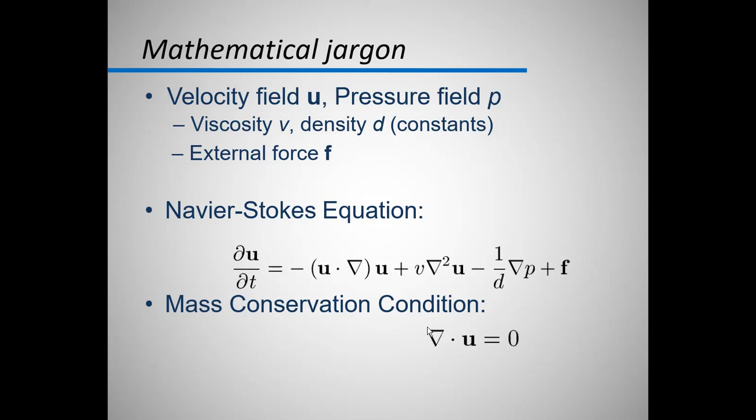So when the viscosity is multiplied by the second derivative of the velocity, it becomes the shear stress terms. For an inviscid flow this term will become zero because the viscosity will become zero. Then we have the pressure term which indicates the pressure field, and f indicates the external force which could be the volumetric heat generation terms or the body force like magnetic force or the gravity.